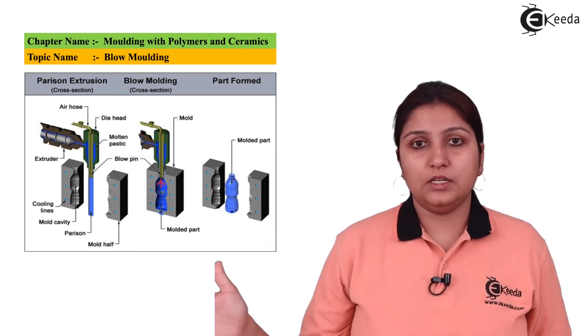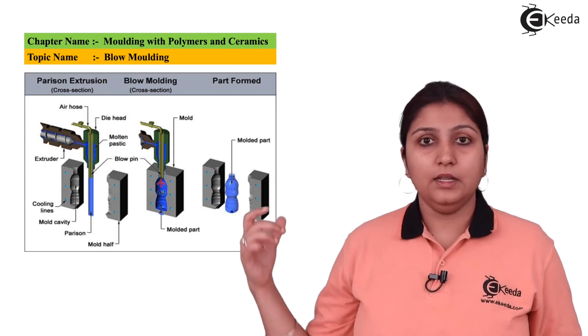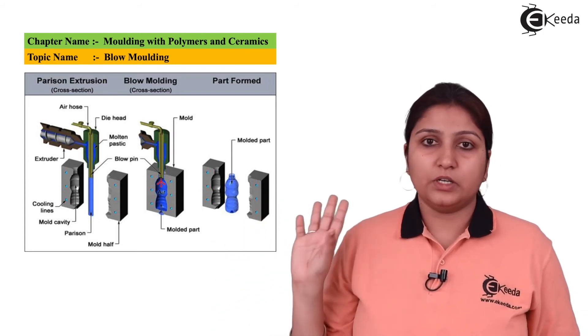One, two, three - the three steps are being shown. First, air is blown. Second, shape of the die. Third, object is formed.